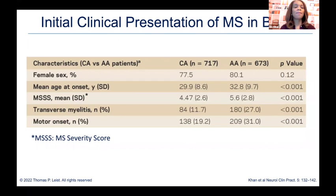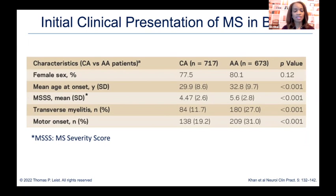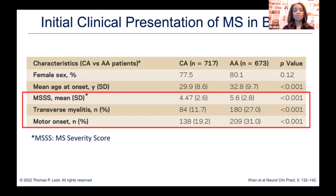Let's talk specifically about Blacks and MS in their initial presentation. Compared to Caucasian counterparts, female sex is very high. The age of onset in African Americans is a little bit older in this cohort. The multiple sclerosis severity scale is higher in Blacks compared to Caucasian Americans. Blacks are more likely to present with transverse myelitis — inflammation of the spinal cord — which affects walking, motor symptoms, dexterity, or upper extremity function, leading to an increase in disability. Motor symptoms present very frequently in Black patients compared to Caucasian counterparts.